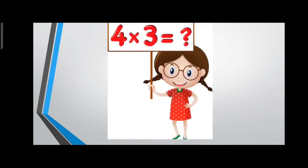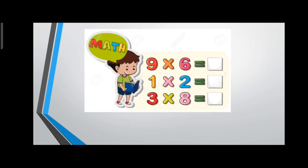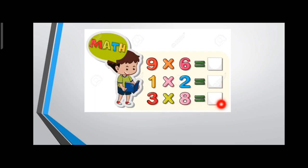Let me show you a picture. 4 multiplied by 3 — can you tell me the answer? It's 12, very good. Next, 9 multiplied by 6 — the answer is 54. What about 1 multiplied by 2? It's 2. And 3 multiplied by 8? That's 24. Very good, clap your hands!